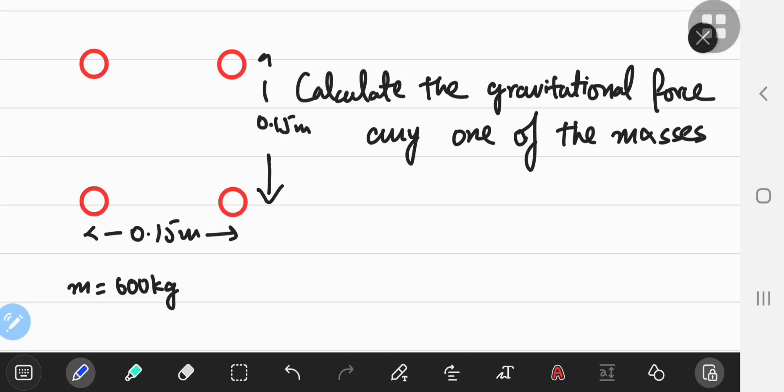Some Newtonian mechanics today. We are given a mass distribution of four identical masses, each of mass 600 kilograms, separated horizontally and vertically by 0.15 meters or 15 centimeters. We have to calculate the gravitational force on any one of these masses.